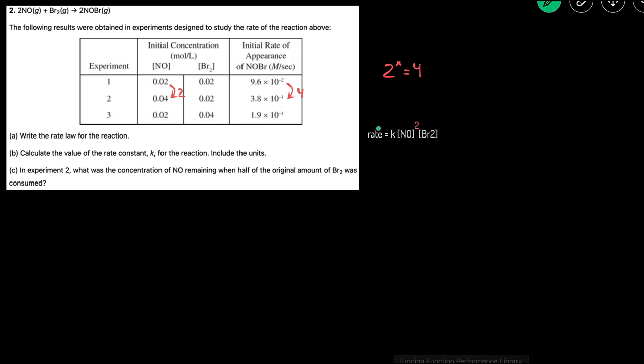Now let's determine the order of Br2. We're going to choose two trials in which the concentration of Br2 changes and the concentration of NO stays the same. And that will be trial 1 and 3, experiment 1 and 3. You can see that the NO is staying the same while the Br2 is changing. The Br2 here is doubling, and we're going to see how the rate changes. So the rate is also approximately doubling.